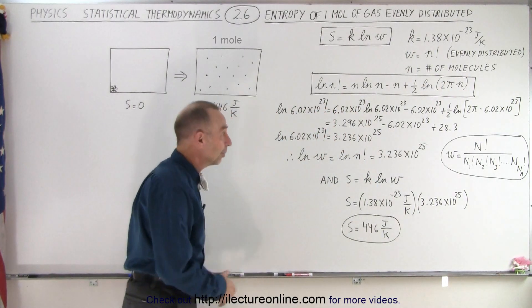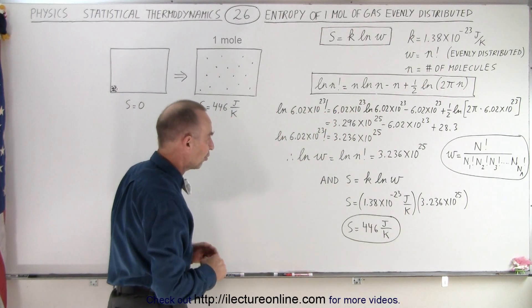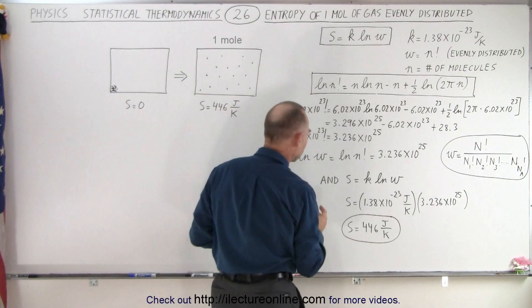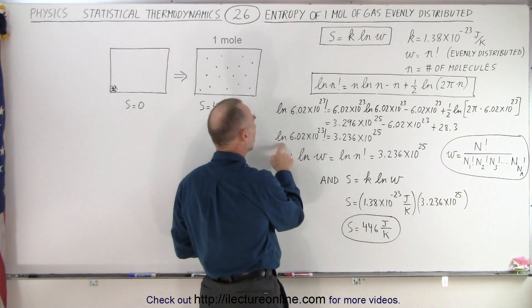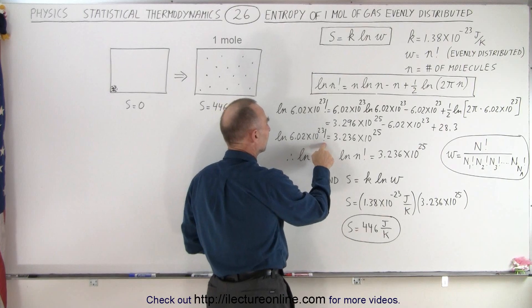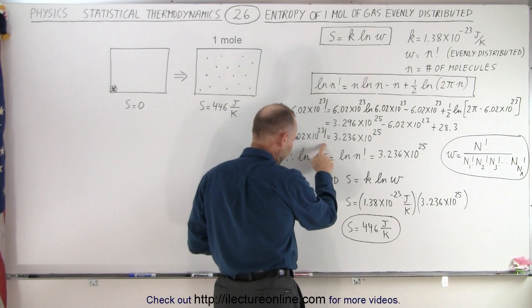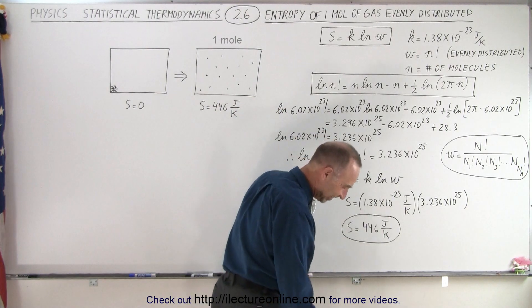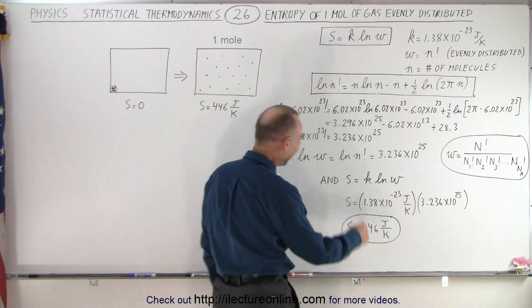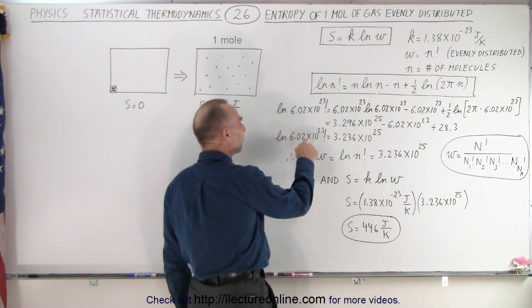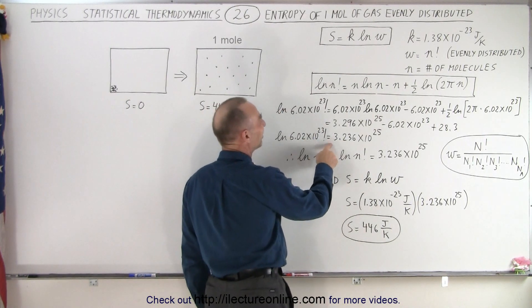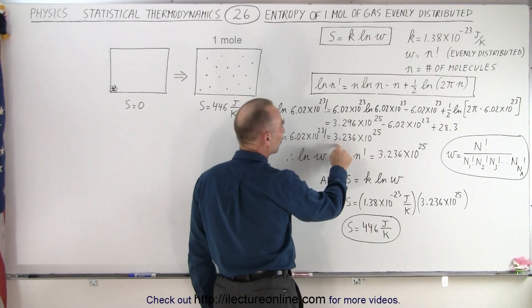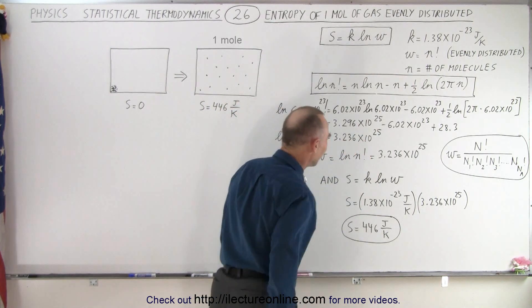See, it doesn't belong there with very large numbers of n. So when we then combine all that, we then find that the natural log of Avogadro's number factorial is equal to this number right here, 3.236 times 10 to the 25th.